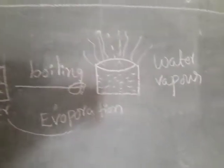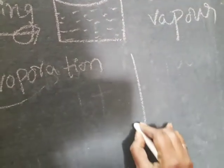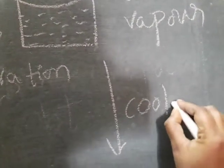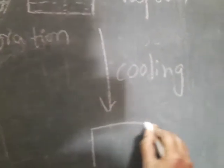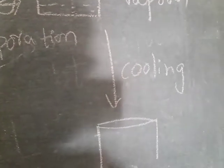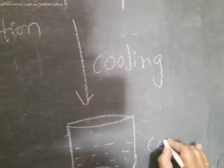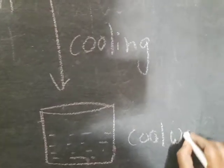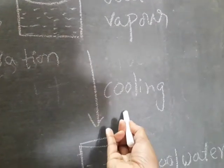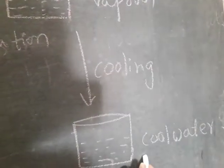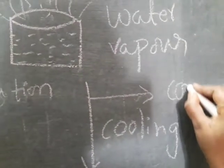Now, the steam — that means water vapor. When this water vapor is cooled, it is converted back into cool water. This process — water vapor changing into cool water — is called condensation.